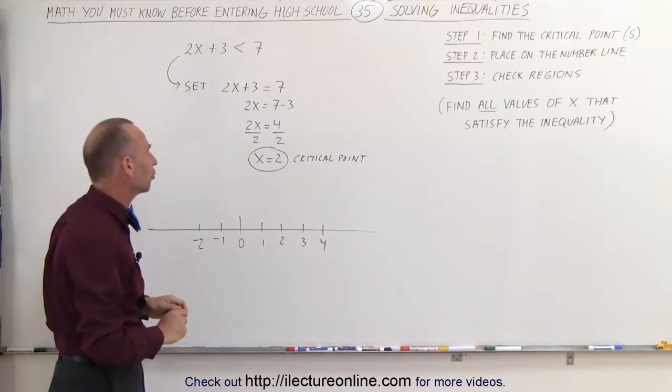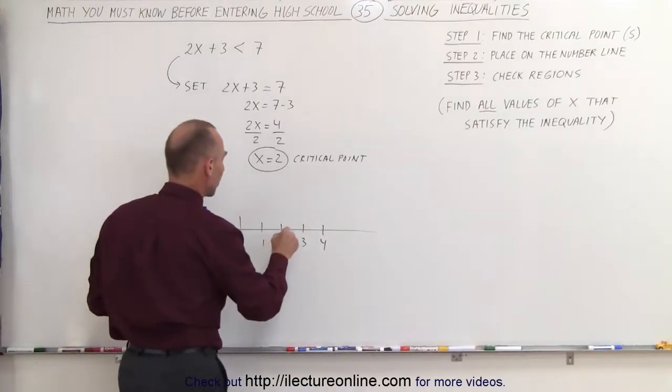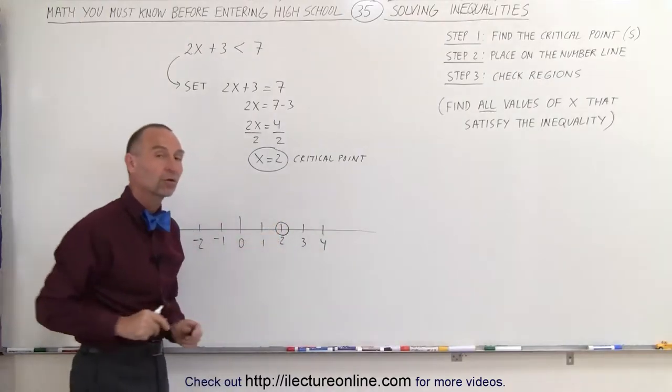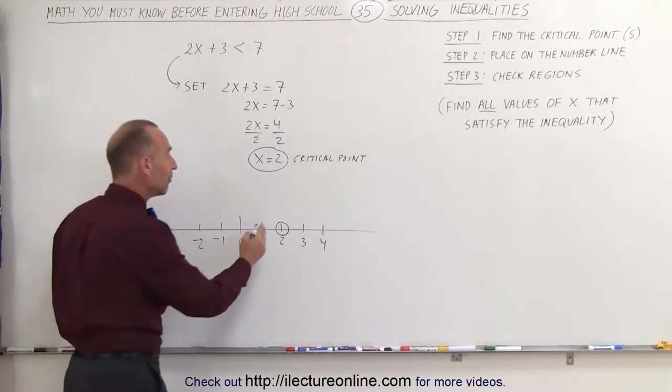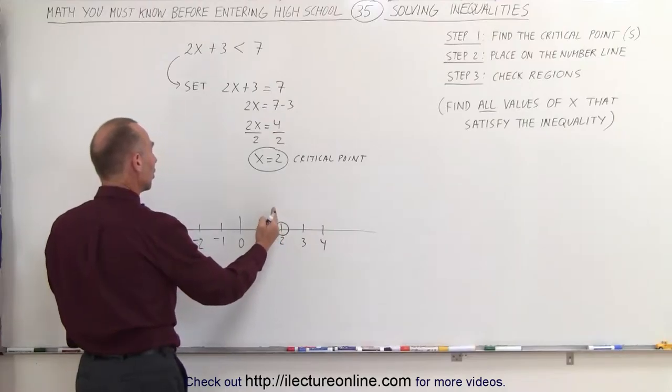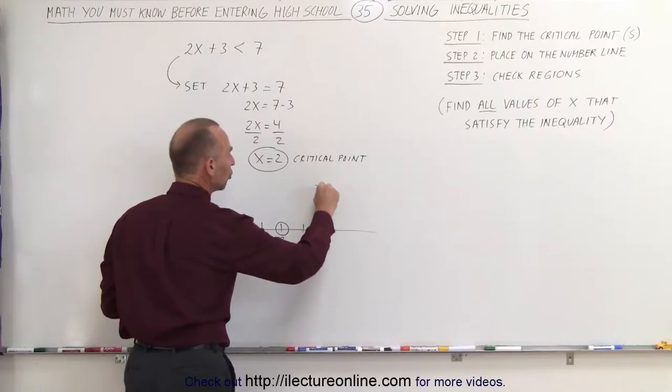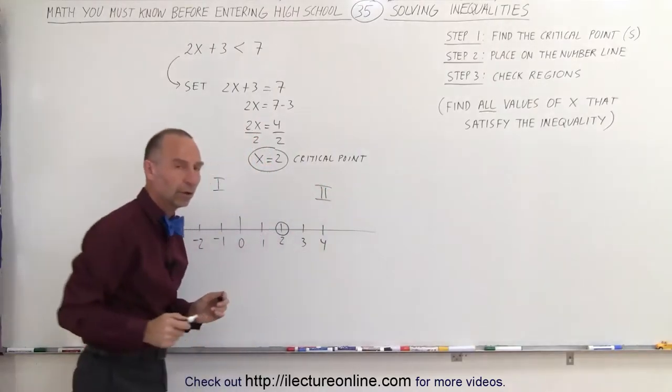...the critical point is not part of the solution, which means we're going to draw a circle right there and not fill it in. Again, 2 is not part of the solution. But it does divide the number line into two regions. Region number 1, which is to the left of the critical point, and region number 2, which is to the right of the critical point.